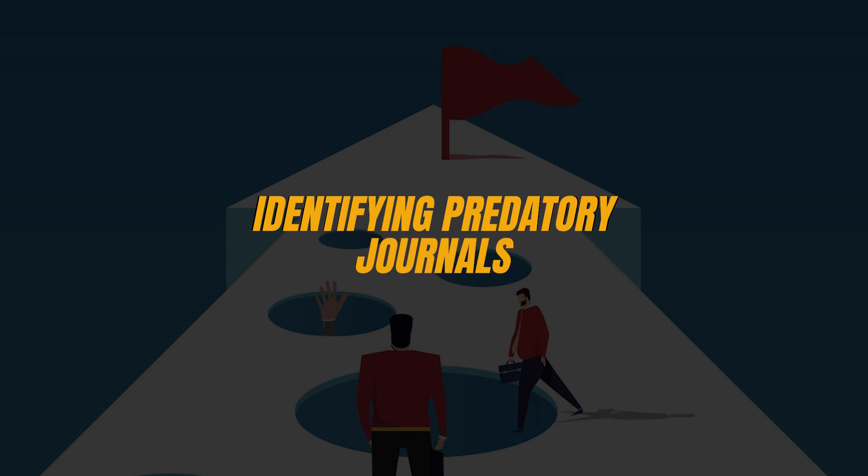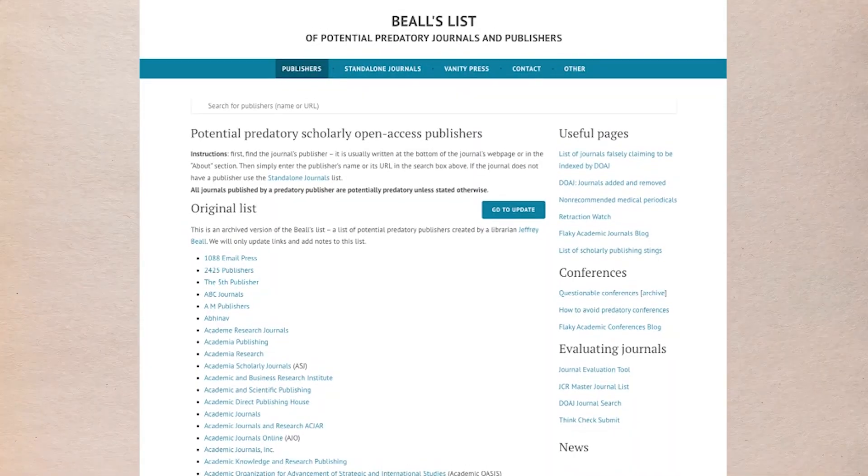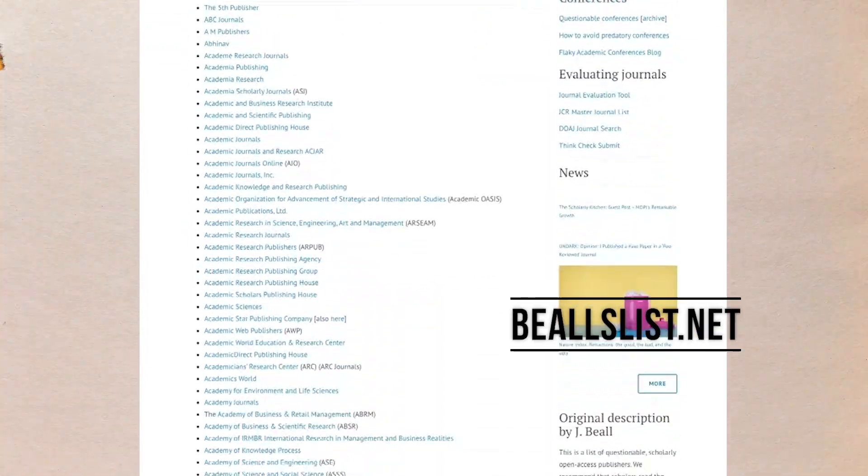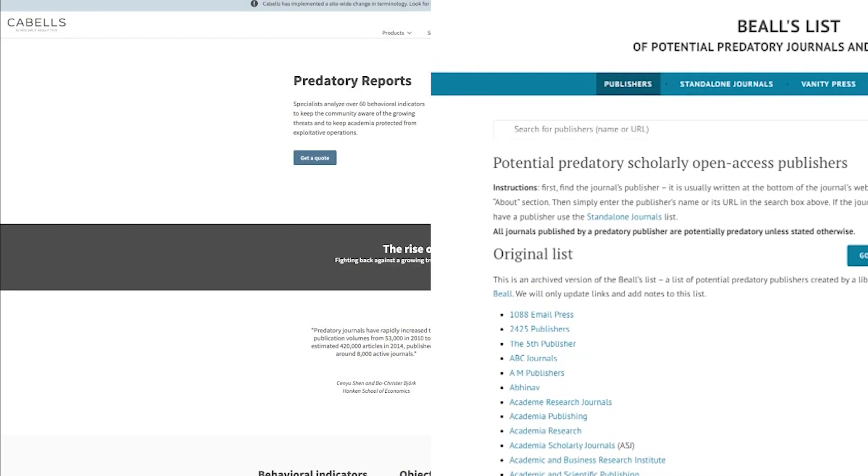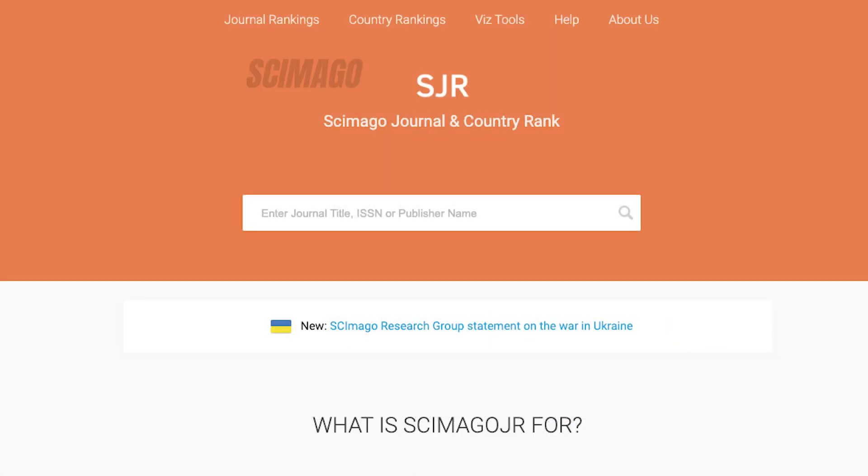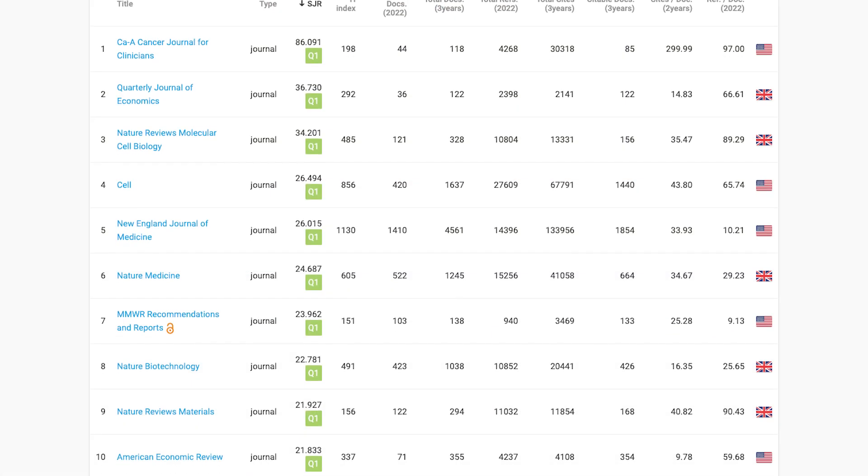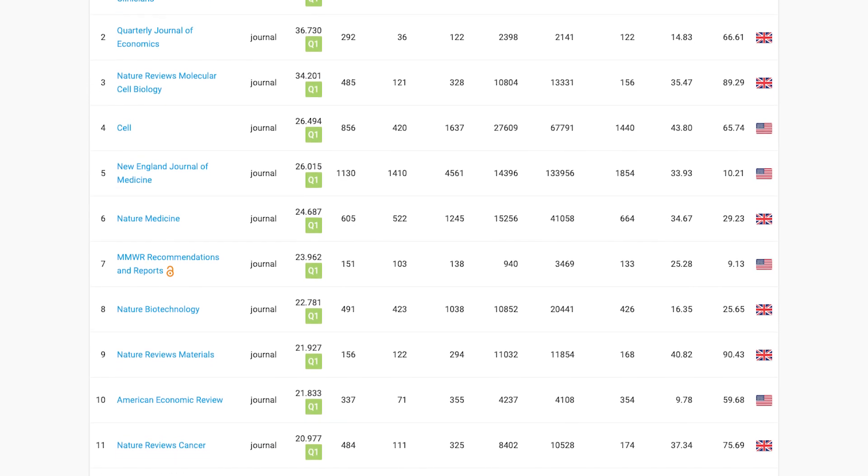To aid in the identification of predatory journals, resources like Jeffrey Beall's List available on BeallsList.net and Cabell's Blacklist provide a list of potentially predatory publishers. Scimago also maintains updated lists of approved journals, ensuring researchers have access to reliable information.